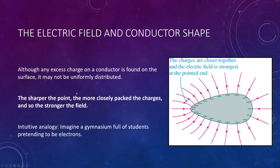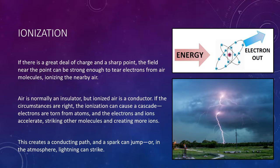This brings us to ionization. If there's a bunch of charge packed into one of those sharp points, the electric field near that point can be so strong that it can actually tear away electrons from molecules in the air, thus ionizing it. Ionization is the process of removing electrons from an atom. Air is normally an insulator, but when you ionize it, it can be a conductor. With the right circumstances, this ionization causes a cascading effect — electrons are consistently torn from atoms, accelerated, and they strike each other, creating even more ions — a runaway effect that creates a conducting path for a spark to jump. This is a very basic view of the formation of a lightning strike.